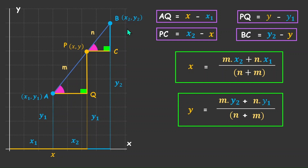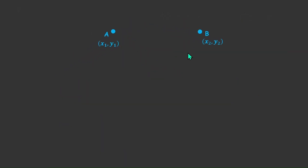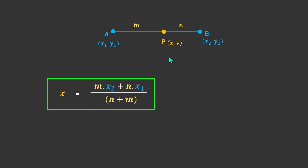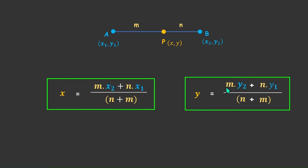Coming back to our original question: we have line segment AB with coordinates x1, y1 and x2, y2, and a point P which cuts this line in ratio M is to N internally. The coordinates of P are: x = (Mx2 + Nx1)/(M + N) and y = (My2 + Ny1)/(M + N). That's all about the section formula. Thank you.